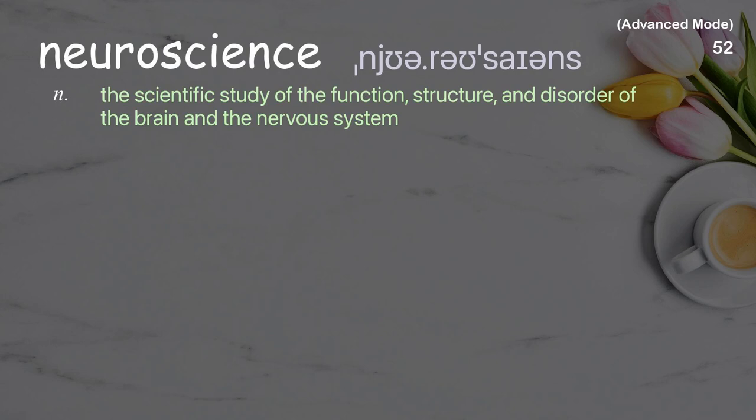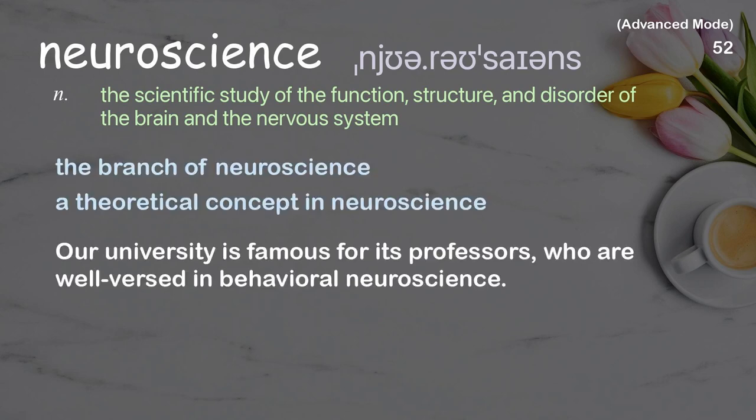Neuroscience: the scientific study of the function, structure, and disorder of the brain and the nervous system. Examples: the branch of neuroscience, a theoretical concept in neuroscience. Our university is famous for its professors who are well-versed in behavioral neuroscience.